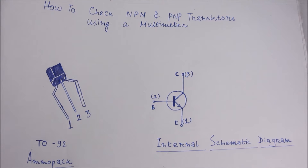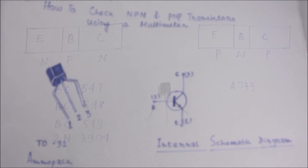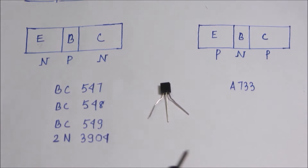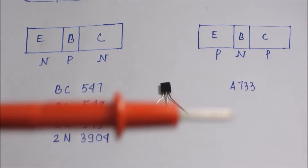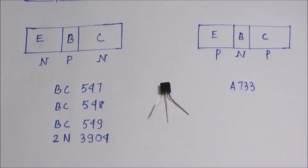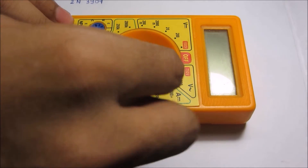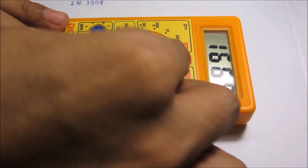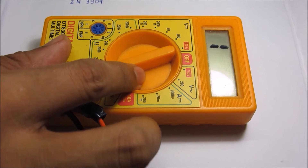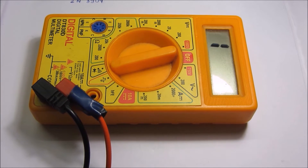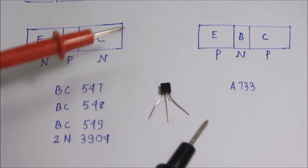Now we are going to show the basic differences in identifying these two types of transistors. We have a transistor in front of us and we need to check whether it is an NPN or PNP transistor. We have a multimeter with a black probe and a red probe. I am going to put the multimeter into continuity mode — you can watch exactly how it looks on the screen.